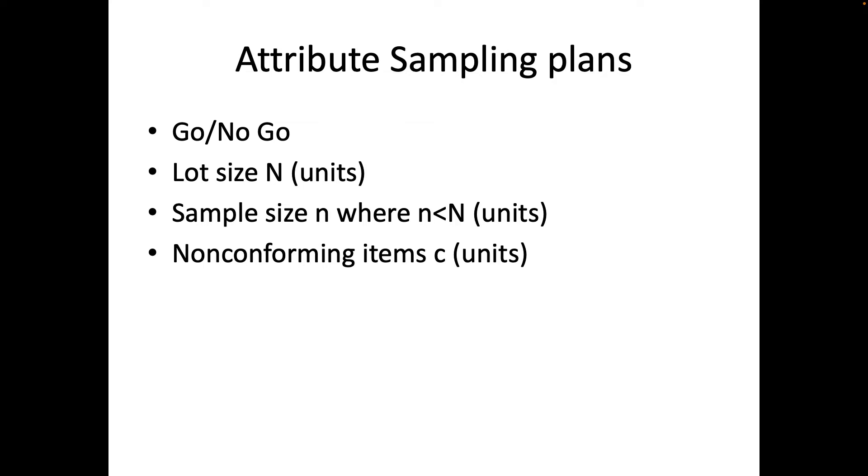Two types of sampling: attribute sampling and then variable sampling. Attribute sampling is the one that's used most often. The idea is this is either acceptable or not acceptable. There's lot sizes which is this capital N and there's sample size which is the lowercase n, and always the lowercase n is less than the lot size. Then you define non-conforming item C that you're willing to accept.